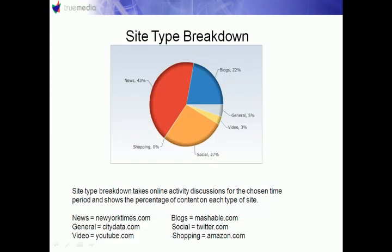The site type breakdown pie chart shows you what type of sites are showing up in your data results the most. Sites are broken down into the following categories: news, general, video, blogs, social, and shopping. In this example, the key terms are showing up mostly on news sites, very little in online video, and none at all in the shopping category.